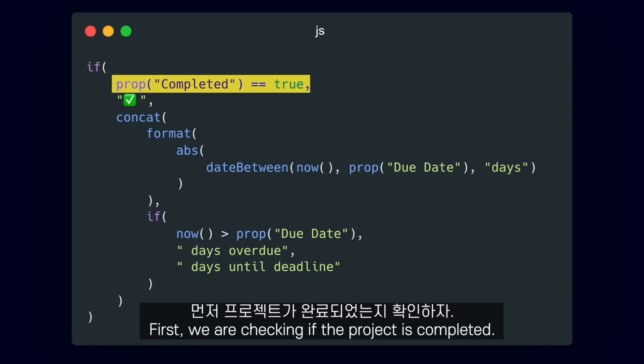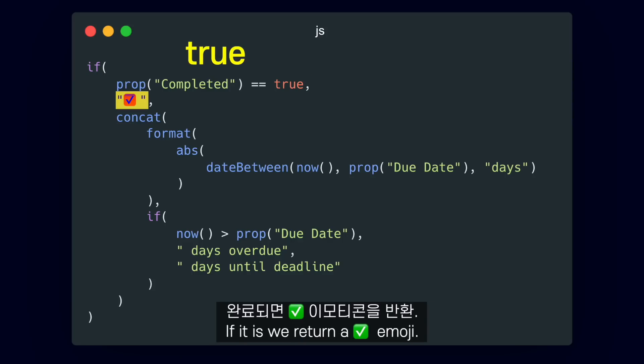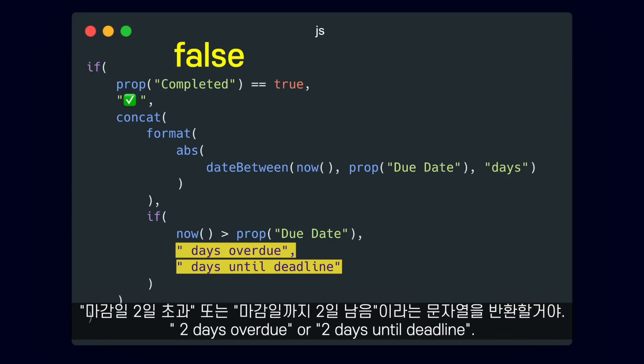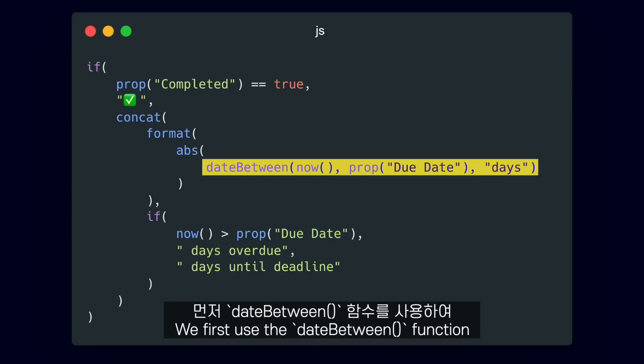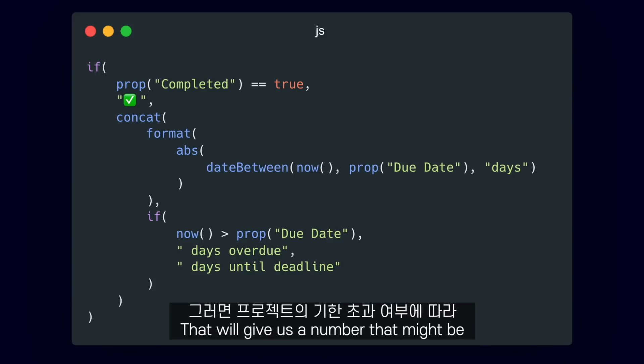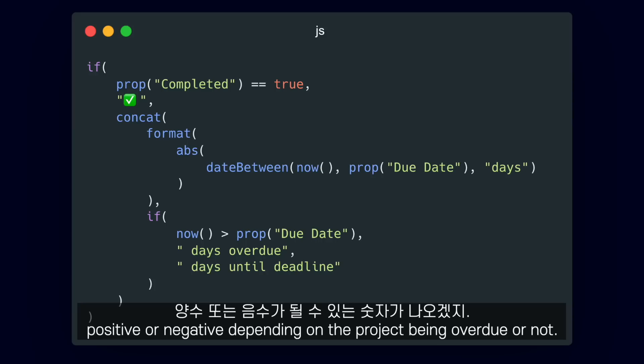First, we are checking if the project is completed. If it is, we return a check emoji. If it isn't, we are going to return a string that says, for example, 'two days overdue' or 'two days until deadline'. We first use the dateBetween function to calculate the difference in days between now and the due date of the project. That will give us a number that might be positive or negative depending on the project being overdue or not.